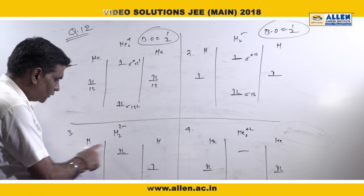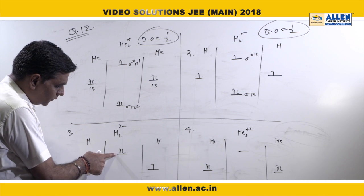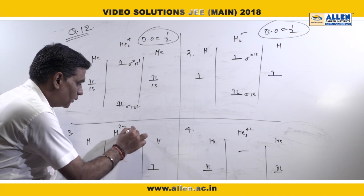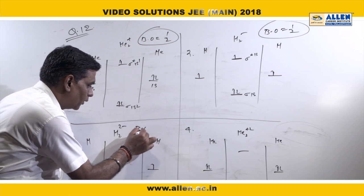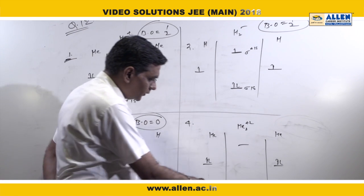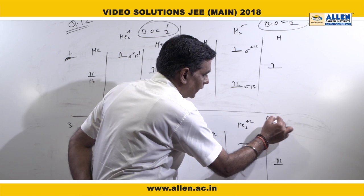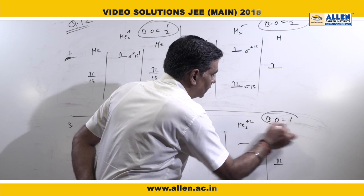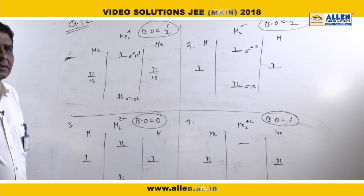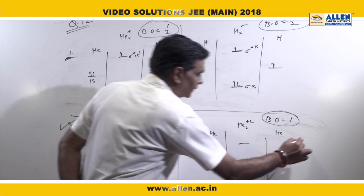For H₂²⁻, when we consider the combination of H and H, the bonding and anti-bonding electrons are equal, so its bond order comes out to be zero. A molecule with bond order zero does not exist. Therefore, the answer is option 3.